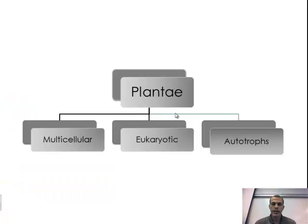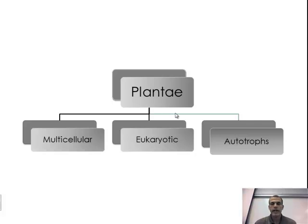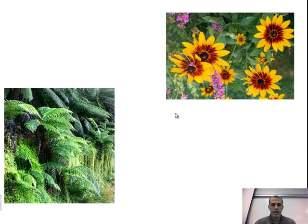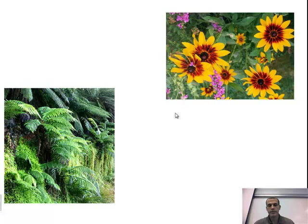The fourth kingdom is the Plantae, the plant kingdom. These are multicellular, eukaryotic, and autotrophs — meaning they produce their own food. We know that plants do photosynthesis, and plants are necessarily not mobile. They are considered autotrophs because they produce their own food through the process of photosynthesis.